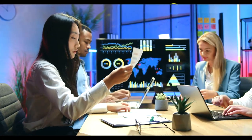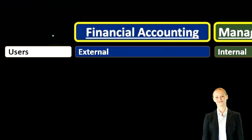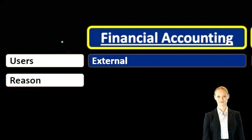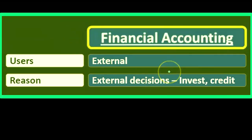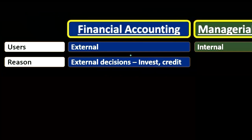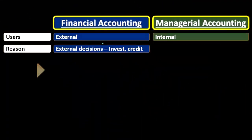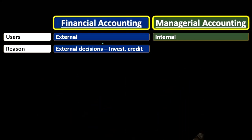Most of the differences between these two types of accounting fall into alignment with this major difference: are we focused on internal users or external users? The reason for financial accounting is external decision-making — we're putting this together for investors and creditors who want to make investment decisions: should they put their money into the business, invest in the stock, or should a bank loan money to the organization? They need financial statements with numbers they can rely on — typically big picture, showing how the company is doing as a whole.